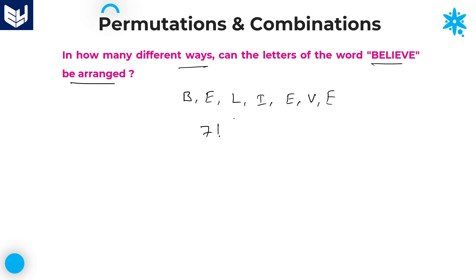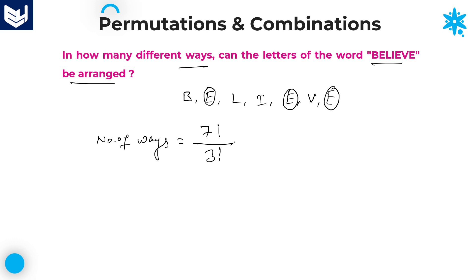Seven letters can be arranged in 7 factorial ways, but if you observe carefully, E is repeated three times. If E is repeated three times, you need to divide by 3 factorial. Many students do not divide by 3 factorial and get the wrong answer. The remaining four letters are all different.